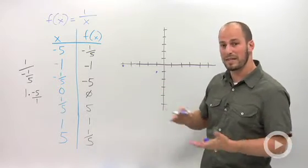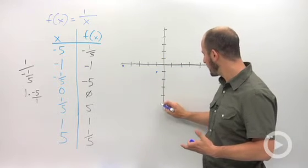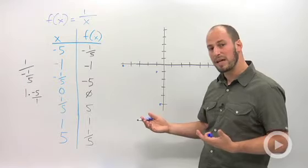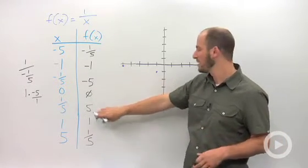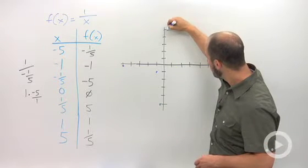Negative one-fifth is a pretty small number, pretty close to zero, so it's going to be just pretty close to the x-axis, and we go down 5. We can't plot anything when x is zero, and so we continue our pattern.